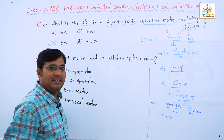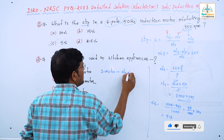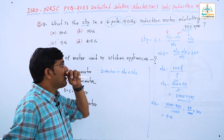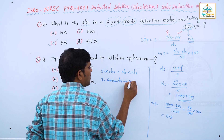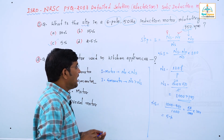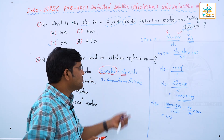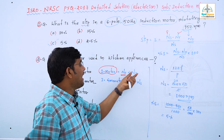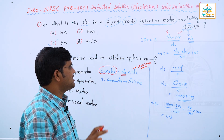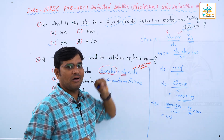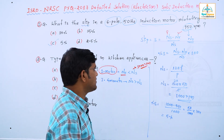Additional information: for an induction motor, the rotor speed is always less than synchronous speed. For an induction generator, the rotor speed is always greater than synchronous speed — this is very important. Here rotor speed is 950 RPM and synchronous speed is 1000 RPM, confirming 1000 minus 950 is 50, giving 50 by 1000 into 100 equals 5%.